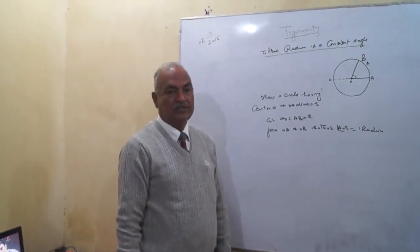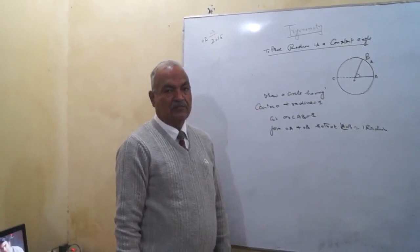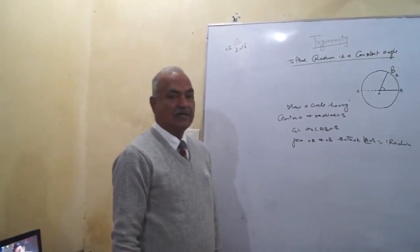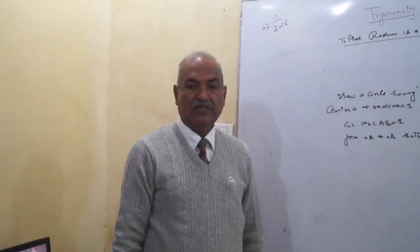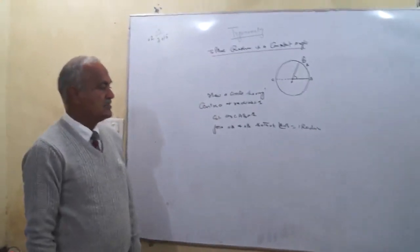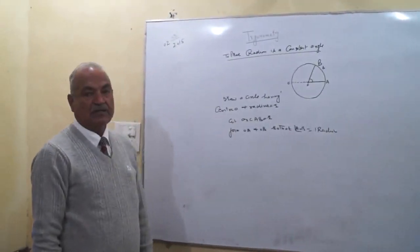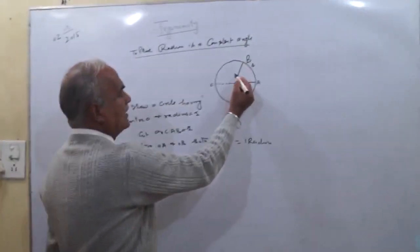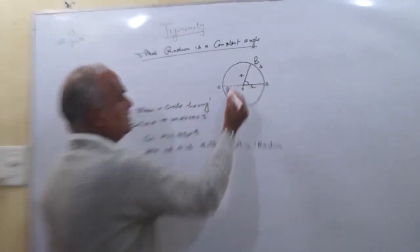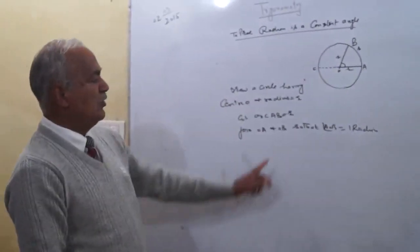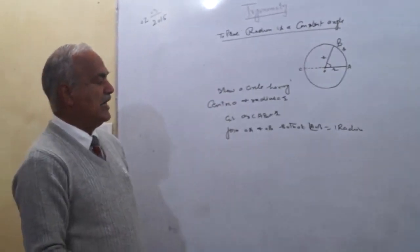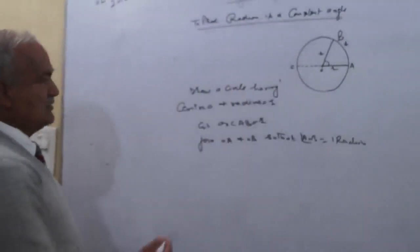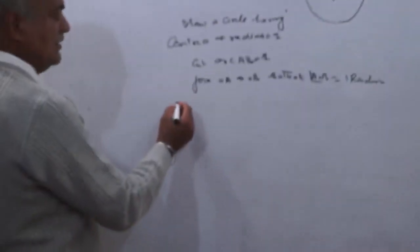To prove that radian is a constant angle, we take a circle with center O and radius R. We cut an arc AB equal to R, where OA is also R and OB is also R. Joining OA and OB, we show that angle AOB is equal to one radian.